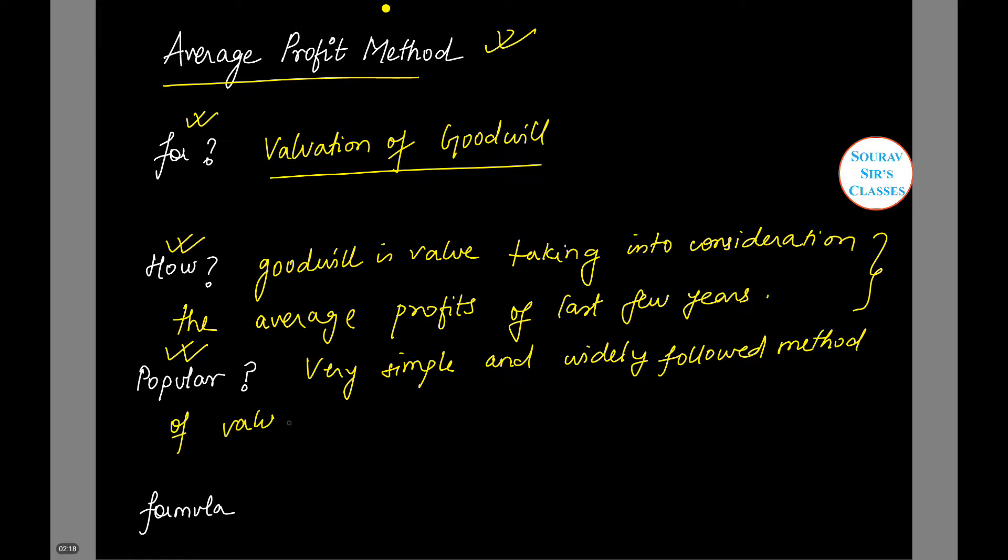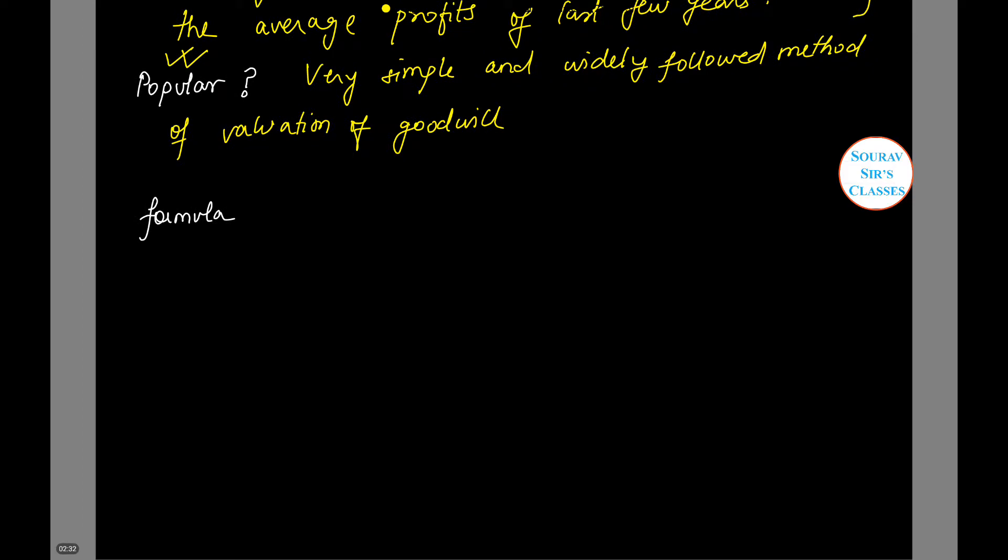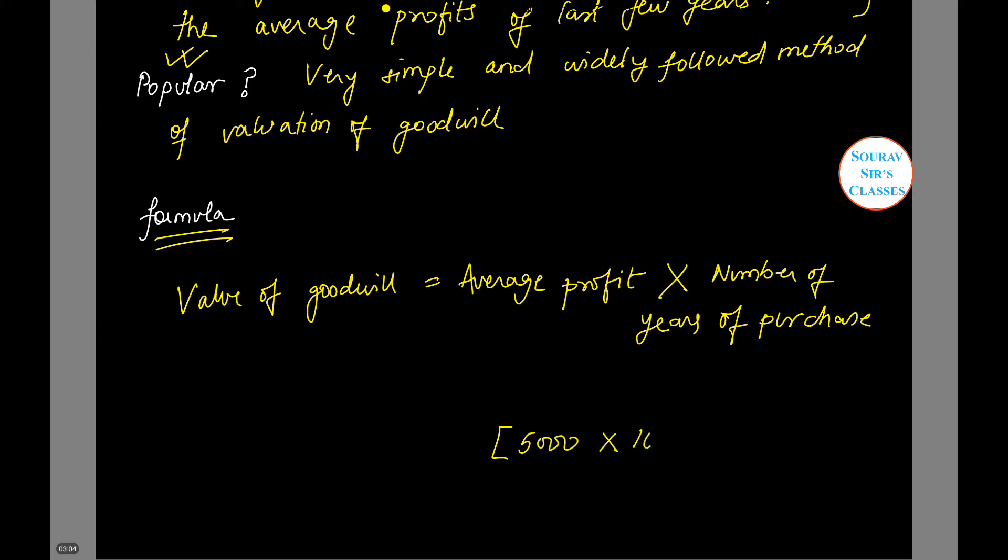Now having said that, let us see the formula for calculation of goodwill in this case, the average profit method. The formula is: average profit multiplied by number of years of purchase. So if the average profit is 5,000 and the number of years of purchase is 10, then the value of the goodwill based on this formula will be 50,000.